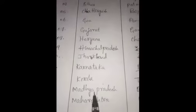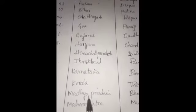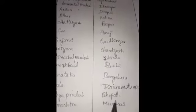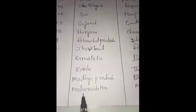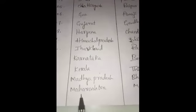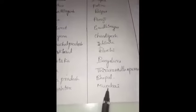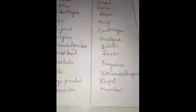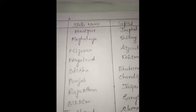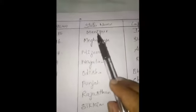Madhya Pradesh state's capital is Bhopal, and Maharashtra state's capital is Mumbai. Okay children, till now we have seen 15 states' names and capitals. Moving further, next is Manipur — Manipur state's capital is Imphal.